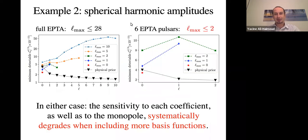So again, we did the same exercise with spherical harmonic amplitude, you can read the paper to see the details. And we also compare with the six EPTA pulsars, and we find agreement and we're able to reproduce the results for L_max greater than two, which is under constraint.